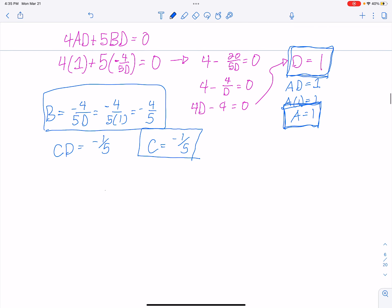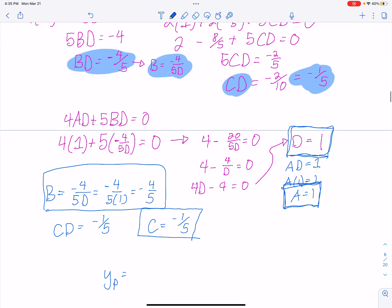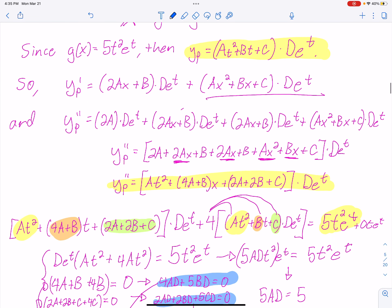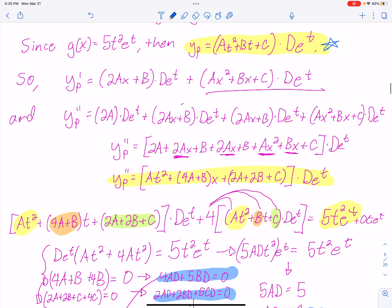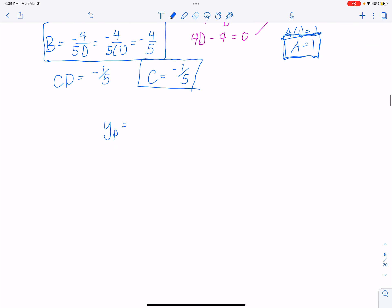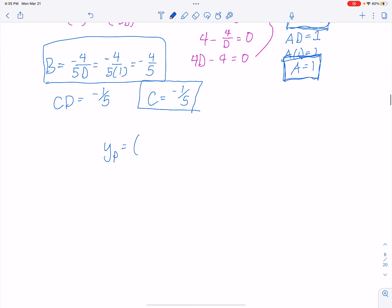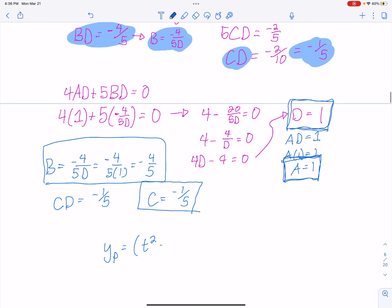Now writing my particular solution, which was way up here in yellow. I get the A, which is 1, so t² plus B. B is -4/5, so -4t/5 plus C, so that's -1/5, times D, which is 1, e^t. So there is my particular solution. So you're done there.